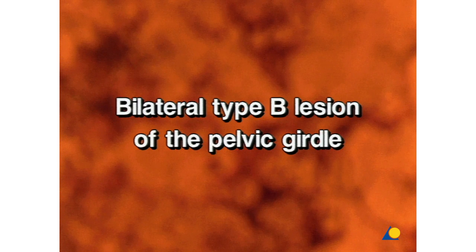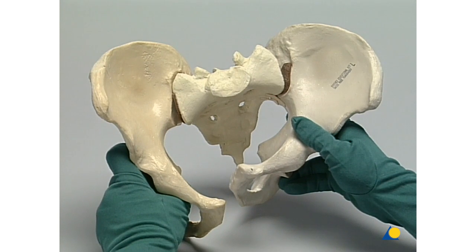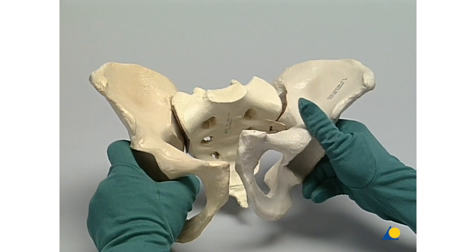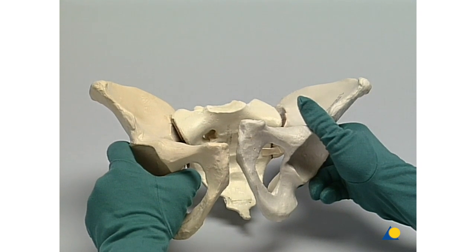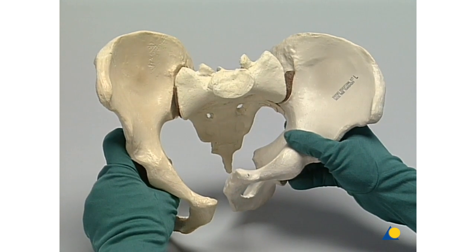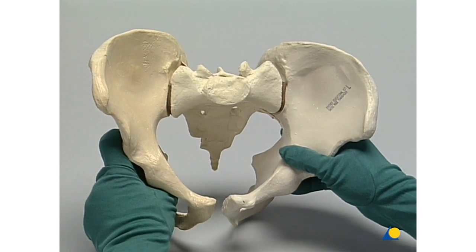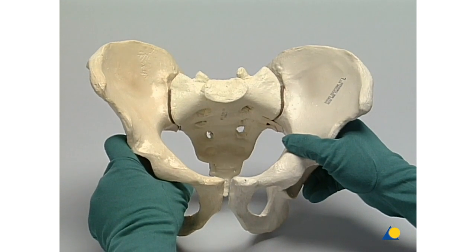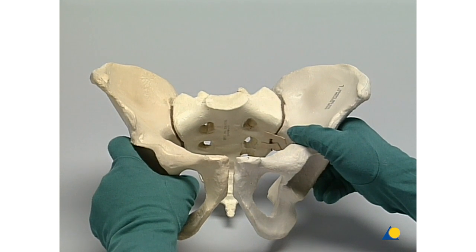Bilateral type B lesion of the pelvic girdle. With this lesion, there is a malalignment of the external rotation of the right hemipelvis and a malalignment of the internal rotation of the left hemipelvis, as well as a flexion malalignment of the left hemipelvis. The reduction is accomplished by internal rotation of the right and external rotation of the left hemipelvis, resulting in the correct derotation of the sacrum. In practice, force is applied in the posterior direction on the right side of the symphysial region, and on the left side, force is applied in the anterior direction.